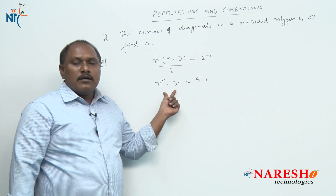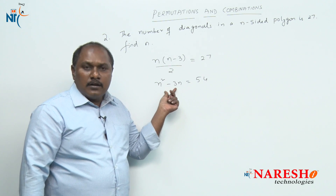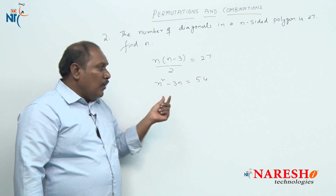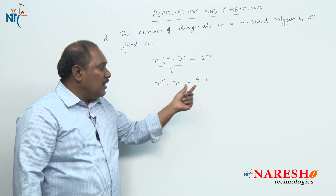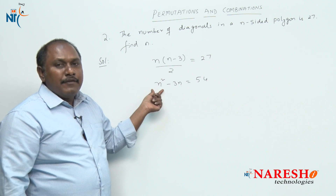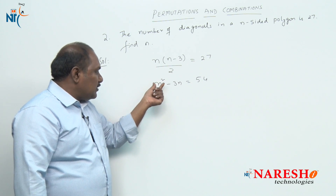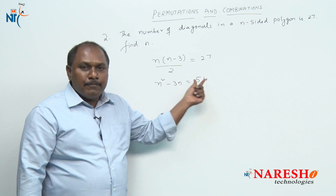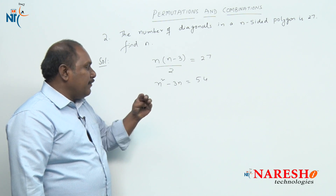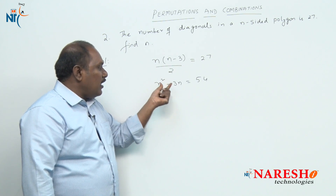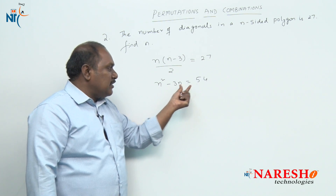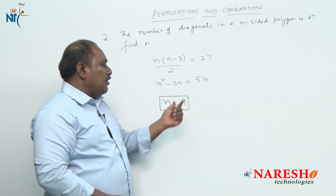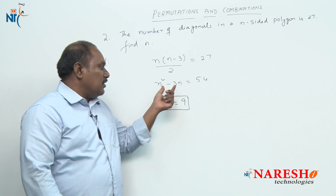We can solve this by quadratic equation or by trial and error. Since n² must be a perfect square greater than 54, the first candidate is 64, which is 8². Then 8² − 3×8 = 64 − 24 = 40, but we need 54. The next perfect square is 81, which is 9². Then 9² − 3×9 = 81 − 27 = 54. So the value of n is 9. You can also solve this using quadratic factoring.